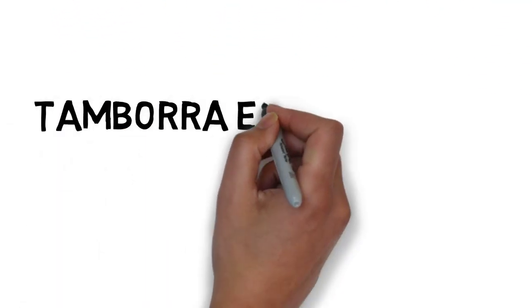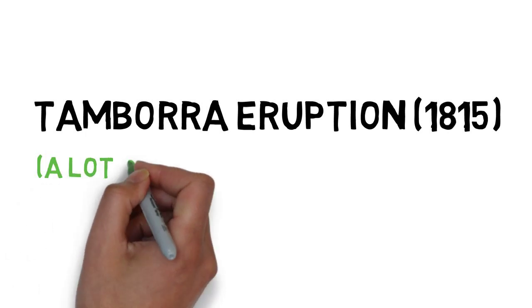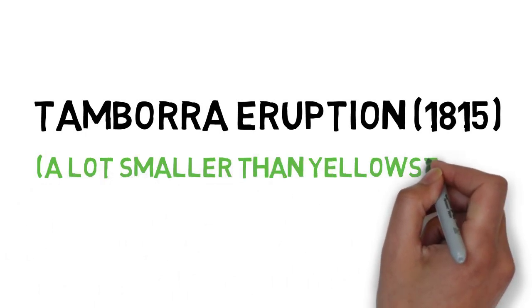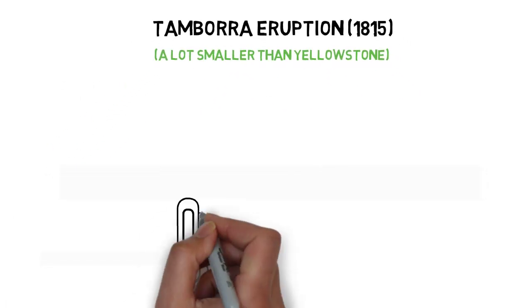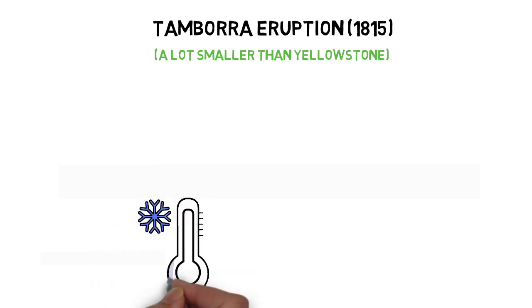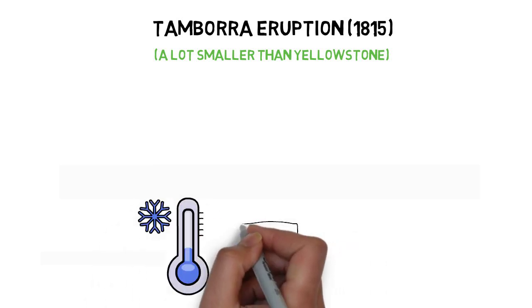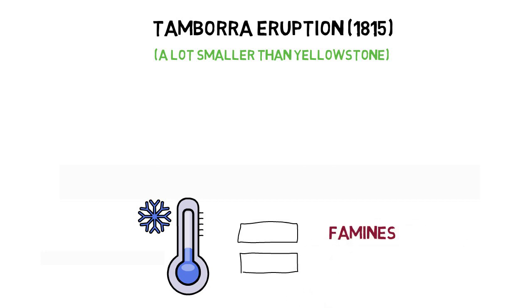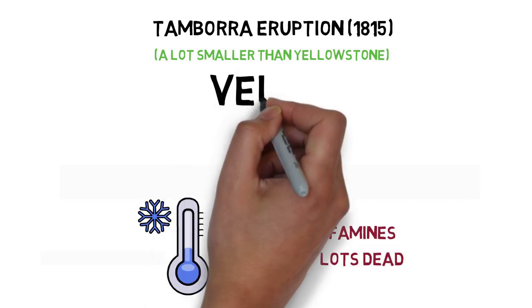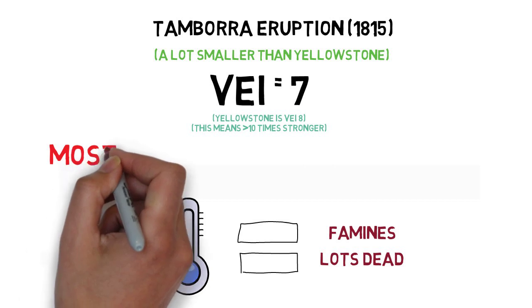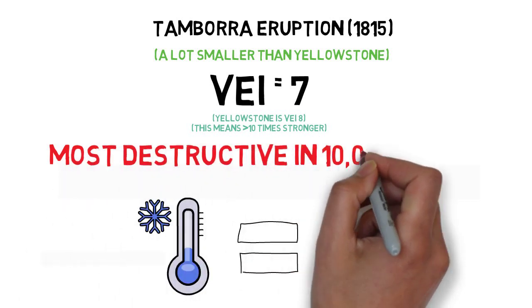Thinking back to the Tambora eruption in 1815, which in comparison to a super eruption of Yellowstone is like a baby eruption, caused such a drop in temperature worldwide that crops were negatively affected, potentially causing famines. This eruption was a 7 on the VEI scale and was the most destructive eruption in the last 10,000 years.